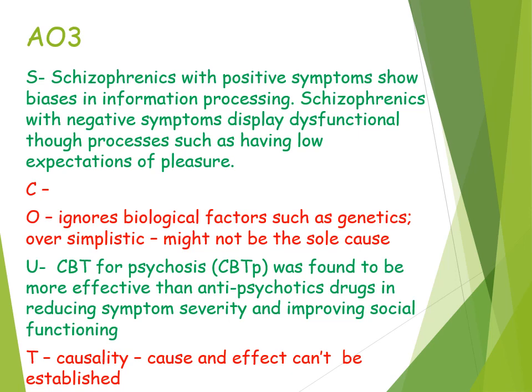This implies the assumptions of the approach are not fully representative or valid, and therefore we may need to take an interactionist viewpoint and look at other explanations. In terms of testing the theory, there are issues surrounding causality: a causal relationship — cause and effect — can't be established. We don't know whether faulty thought processes are actually a symptom and consequence of having schizophrenia, rather than the cause of it. Just because there's a link between the two doesn't mean we can safely say it has led to the development of schizophrenia.